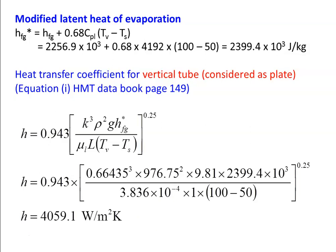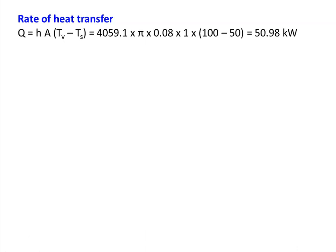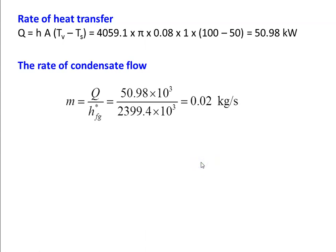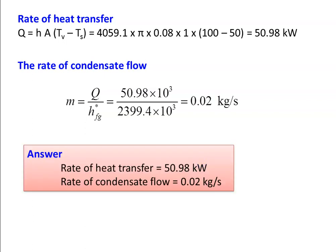The rate of heat transfer Q = H × A × (Tv − Ts). Here the area is π × D × L for a cylindrical vertical pipe = π × 0.08 × 1. Substituting all numerical values, the rate of heat transfer Q = 50.98 kW. The mass of condensate M = Q / HFG* = 0.02 kg/s. Answer to the problem: rate of heat transfer = 50.98 kW and rate of condensate flow = 0.02 kg/s.